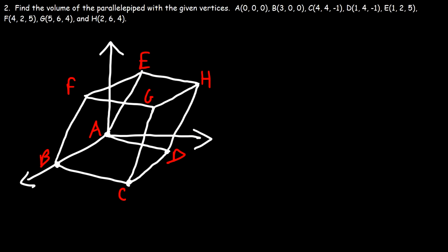Now let's move on to the next problem: find the volume of the parallelepiped with the given vertices. We need to take the given information and get three vectors that form adjacent edges on the parallelepiped. The best way is to find a starting point — in this case point A, because that's the origin — and draw our three vectors starting from A. Vector V goes from A to B, vector W goes from A to D, and vector U goes from A to E.